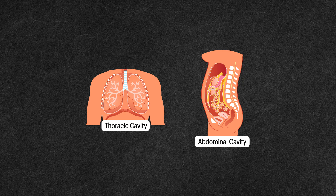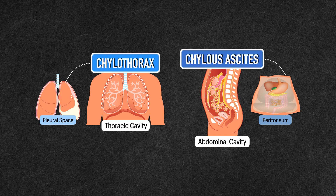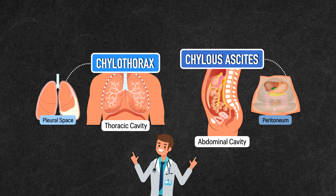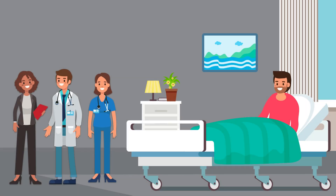Furthermore, depending on where the leak transpires, chyle can accumulate in the thoracic or abdominal cavity. The most common locations are the pleural space and the peritoneum, resulting in a chylothorax and chyloascites respectively. Chyle in either of these locations can compress and impair the function of the organs they surround. At a minimum, this will cause uncomfortable symptoms like shortness of breath. The procedures to drain it may be painful and they come with risks like internal bleeding and organ perforation.